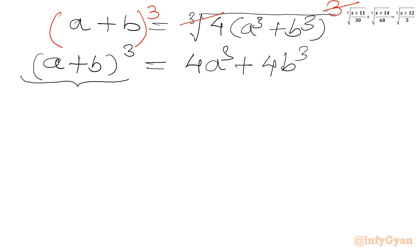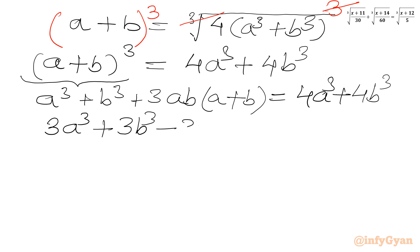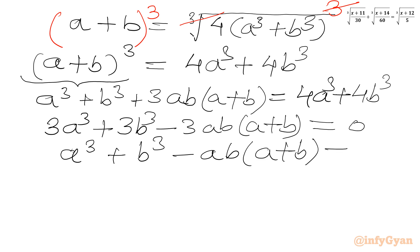Let us apply the (a plus b) whole cube identity: a cube plus b cube plus 3ab times (a plus b) equals 4a cube plus 4b cube. Taking all terms to the RHS: 4a cube minus a cube is 3a cube, 4b cube minus b cube is 3b cube. So: 3a cube plus 3b cube minus 3ab times (a plus b) equals 0.